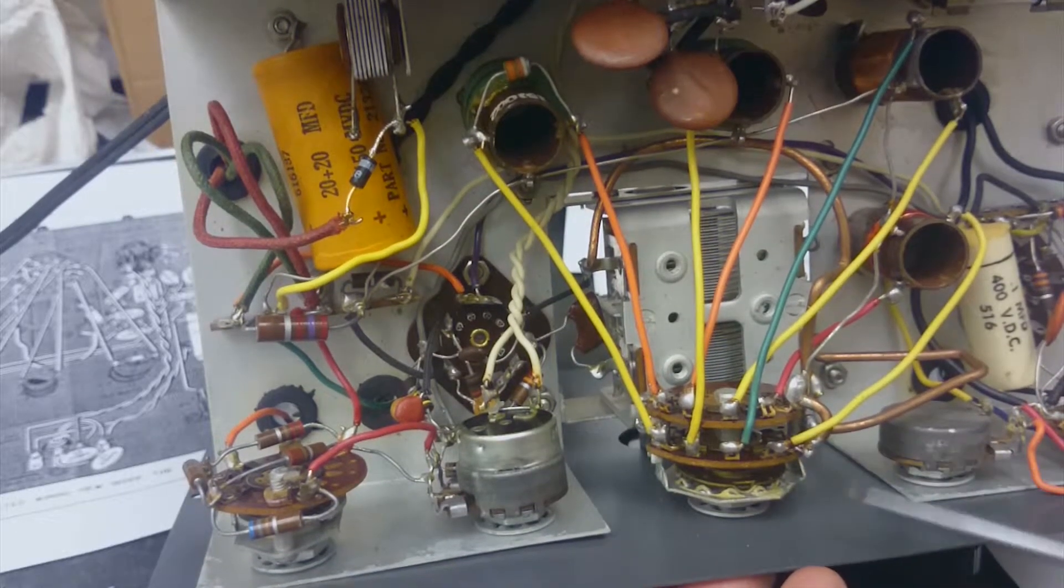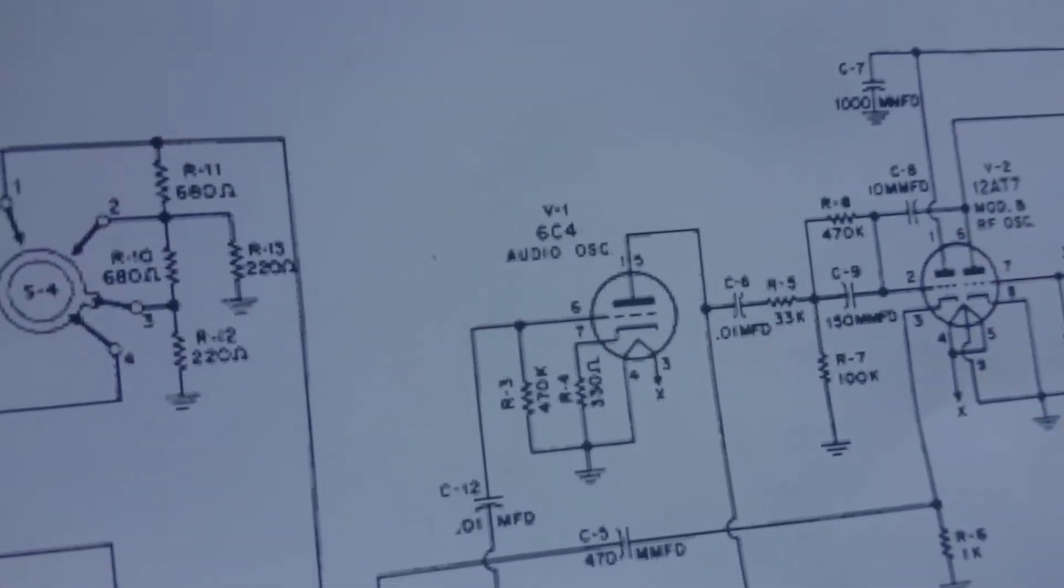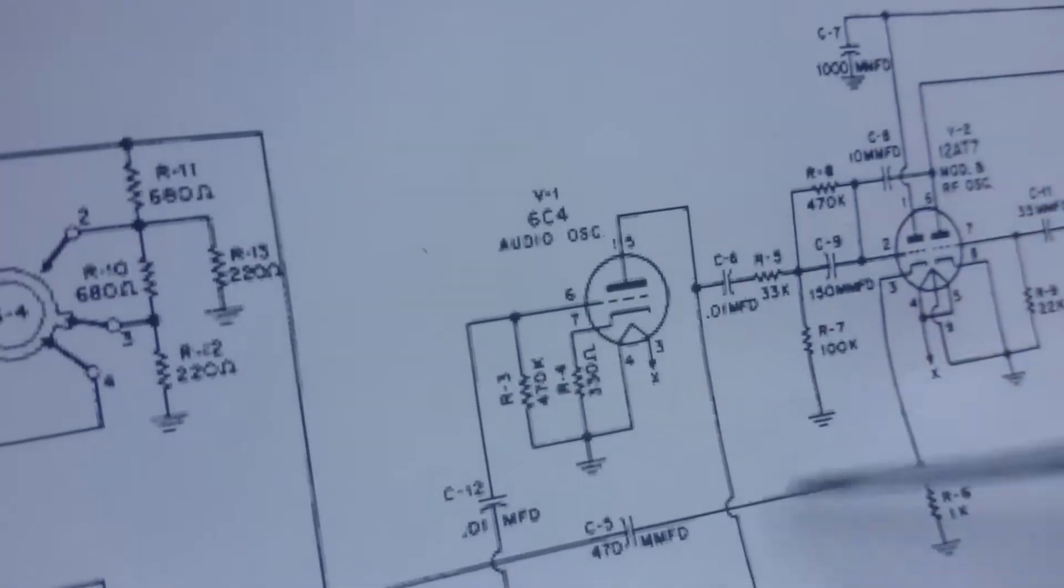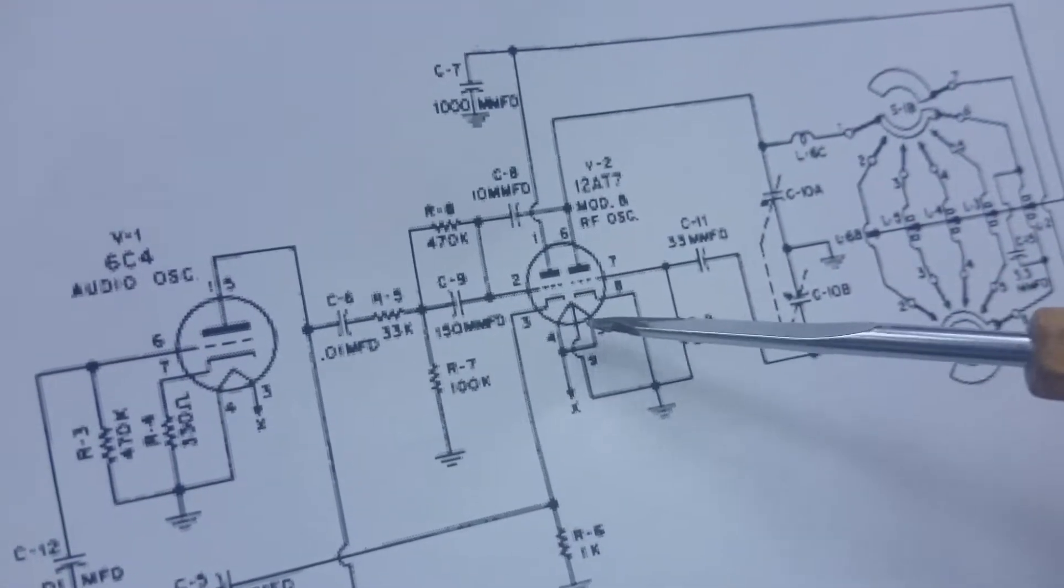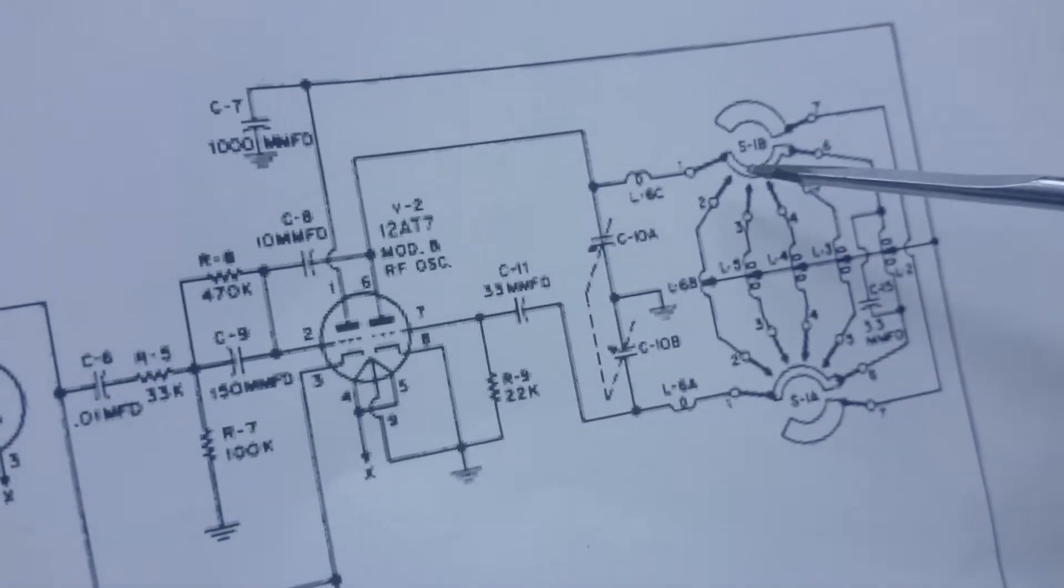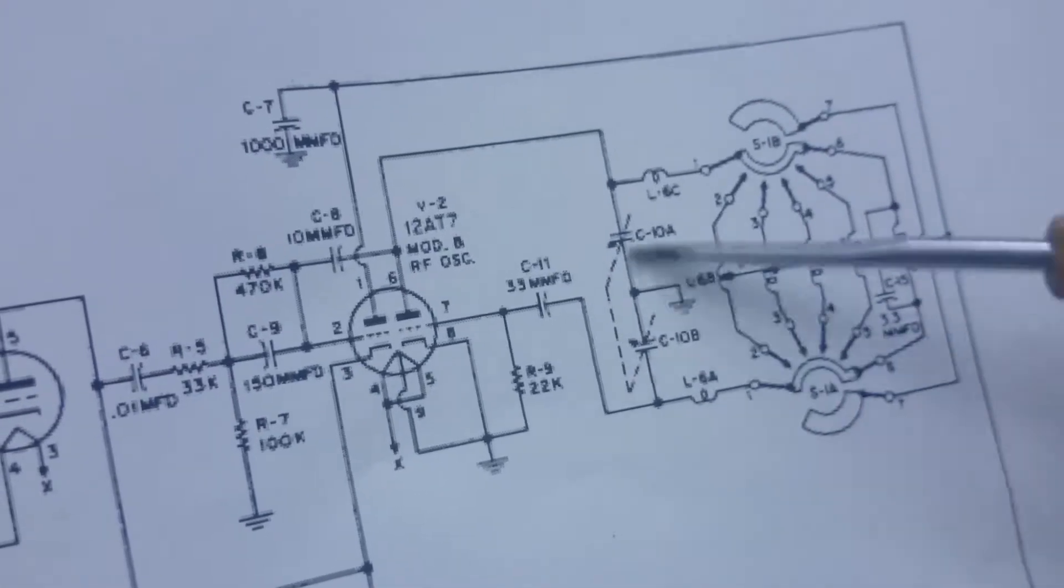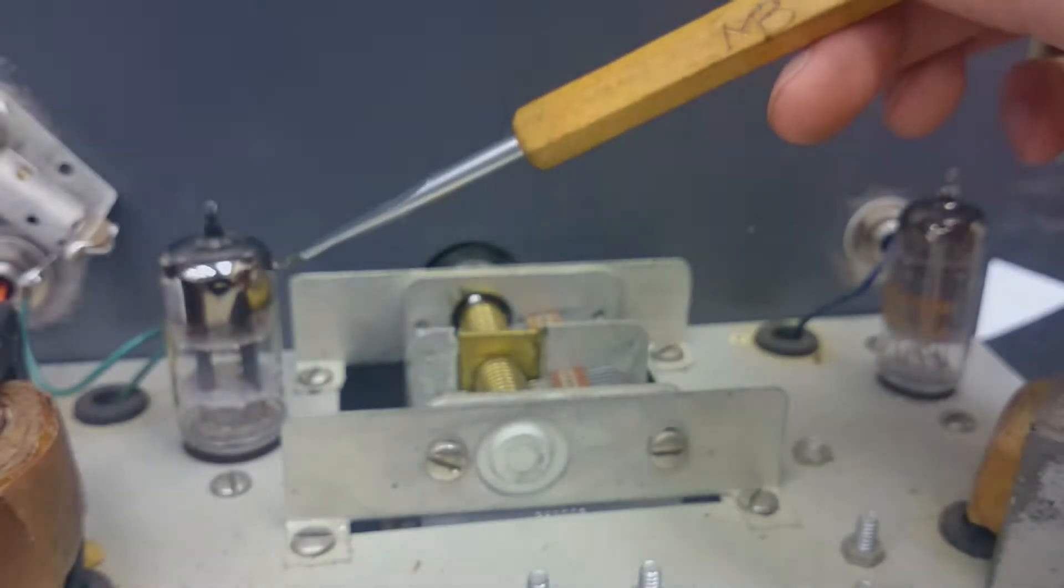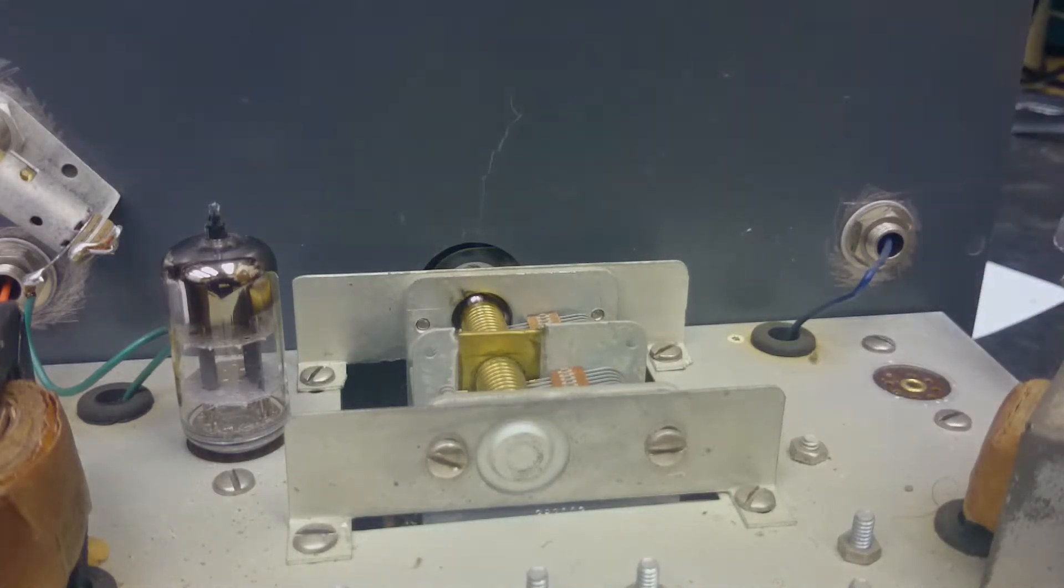I've already sprayed some contact cleaner onto all these switches and potentiometers. Let's take a look at these tubes here. I've got a 12AT7 and a 6A4. The 6A4 is a single triode used for the audio oscillator. The other tube is a dual triode that drives the RF. The 6A4 is one on the right. The original 6A4 tube tested bad in my tester, so before I even turned it on, I replaced it.